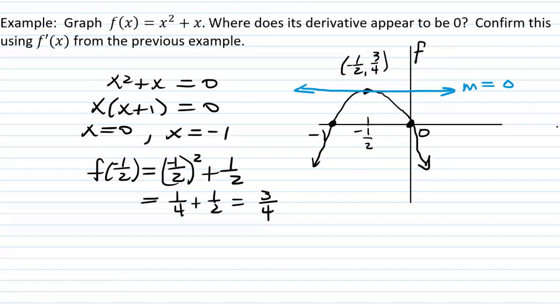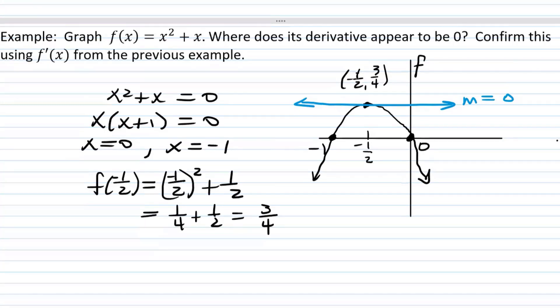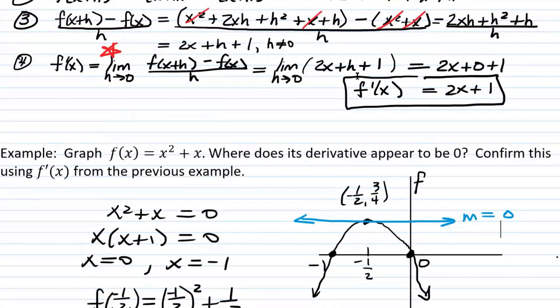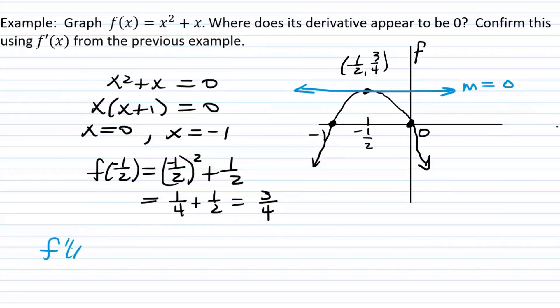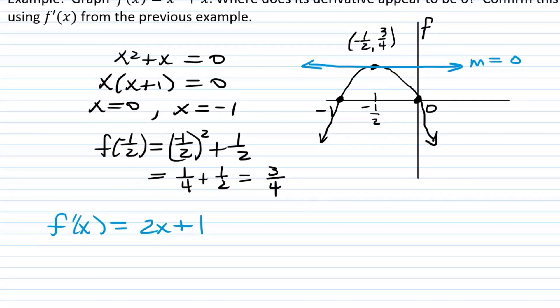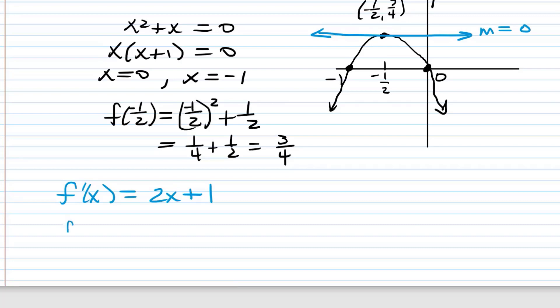Now it says confirm this using f prime of x from the previous example. In the previous example, f prime of x turned out to be two x plus one. So f prime of x equals two x plus one. So how can we confirm that the derivative is equal to zero at negative one half? What would I do? How would I use f prime of x there? There's two ways to go about it. One way would be to set two x plus one equal to zero and solve for x. Or yes, Michael, we can just plug in in this case. So we would have f prime of negative one half would be two times negative one half plus one, which would be negative one plus one, which would be zero. So that confirms that the derivative at one half is zero.